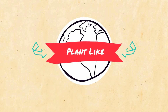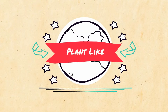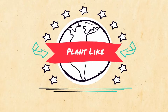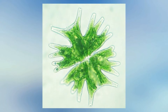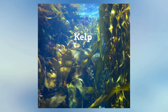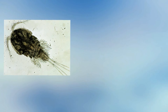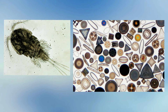Plant-like protists practice photosynthesis but they don't have roots or leaves. One common example is algae. Some algae is unicellular but kelp is an algae and is very large. Other plant-like protists include euglenoids, which move with a flagella, plankton, and diatoms, which look like glass.